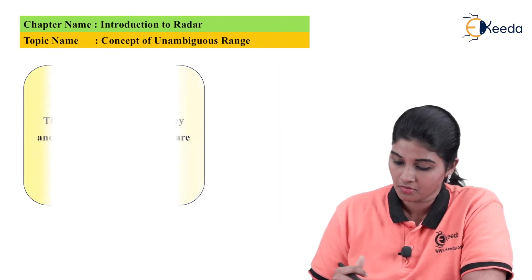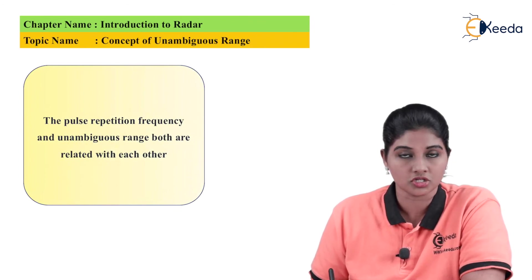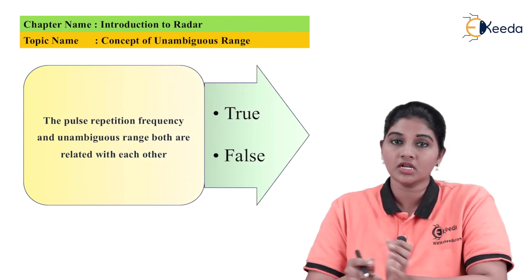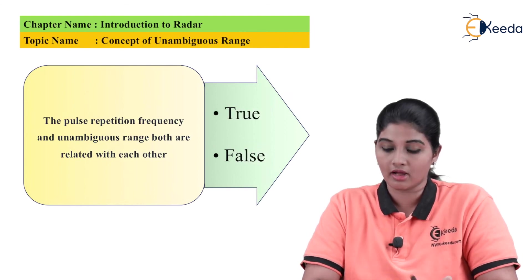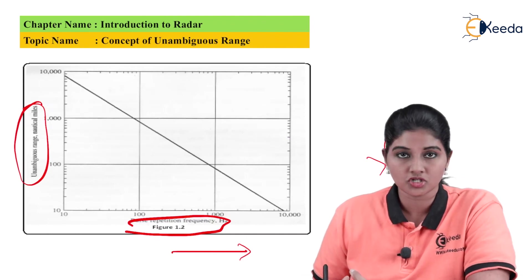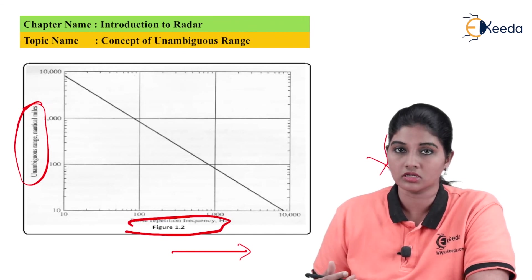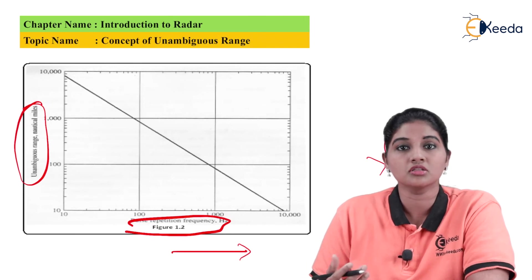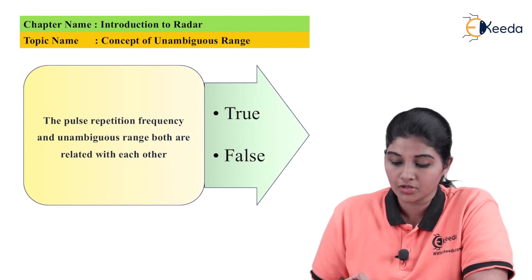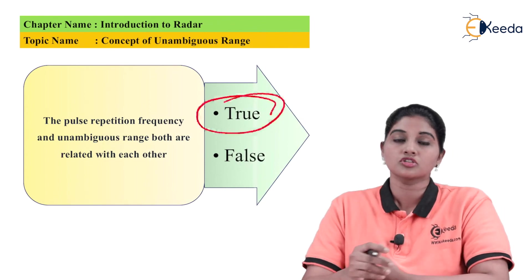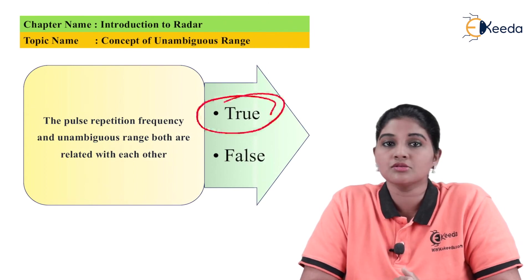The second question: pulse repetition frequency and unambiguous range are related to each other — true or false? There is definitely a relationship between PRF and unambiguous range. The graph shows that as frequency increases, unambiguous range decreases, because the chances of range calculation errors increase. Therefore, the statement is true.